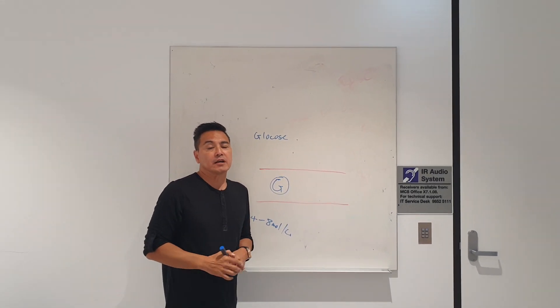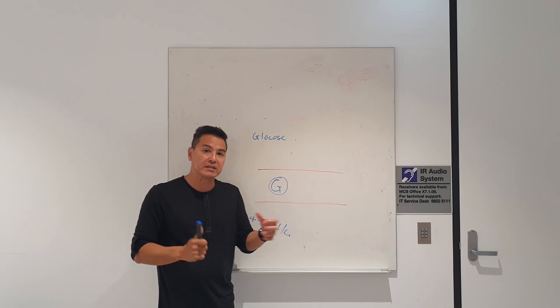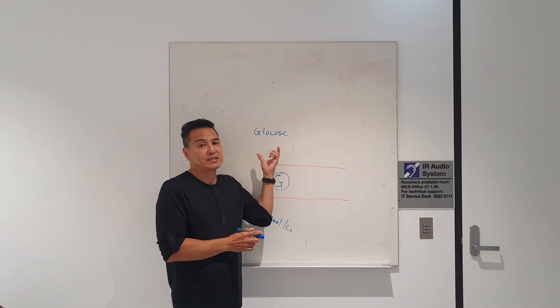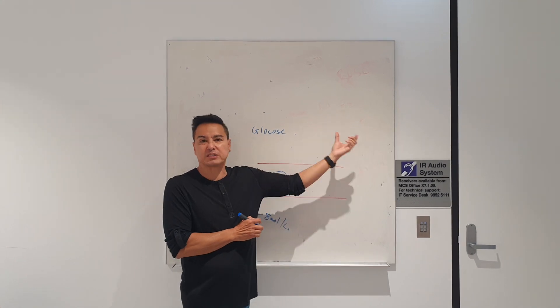We need insulin that's secreted from the pancreas. The beta cells produce the insulin and inject it into our blood, and it breaks it down into pyruvate which gives us some ATP.